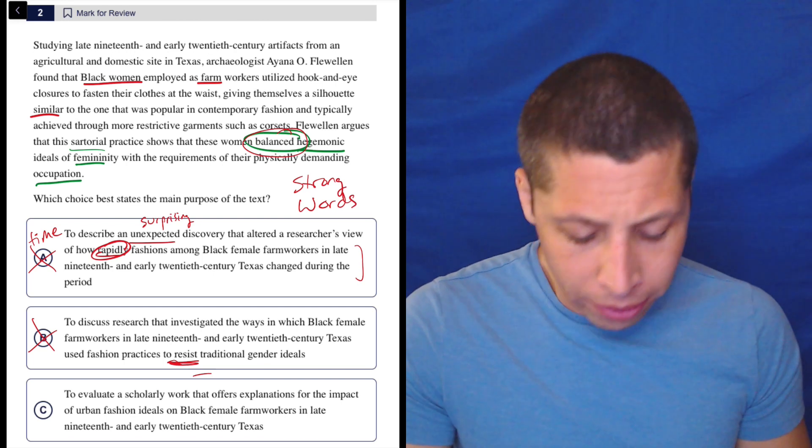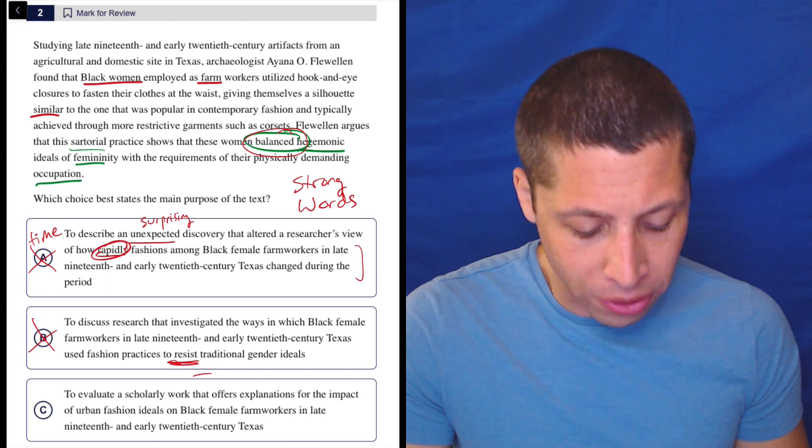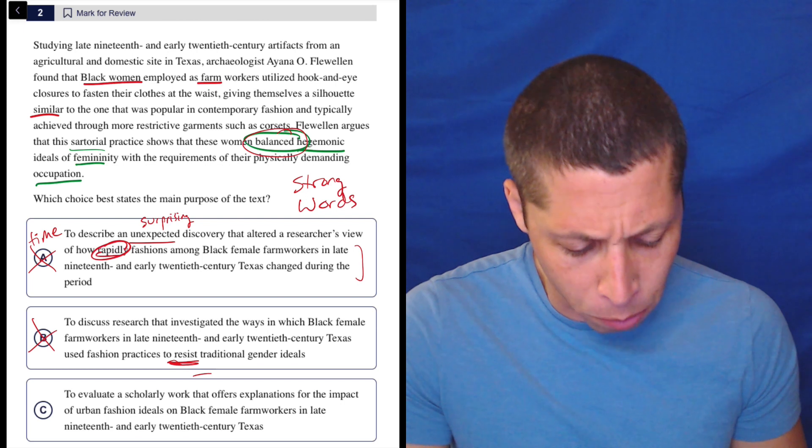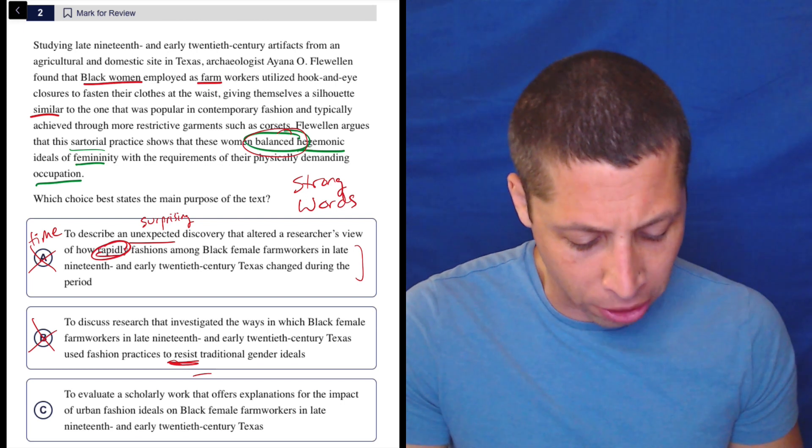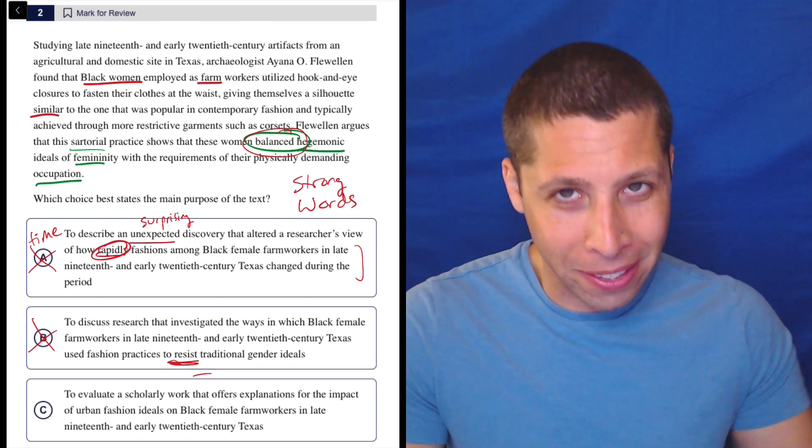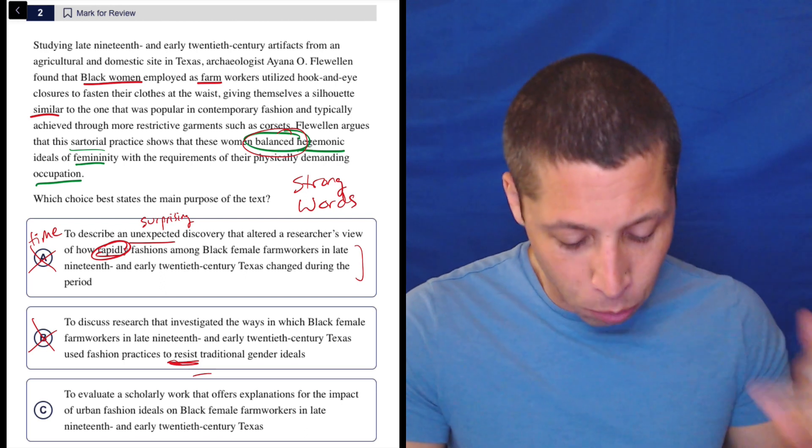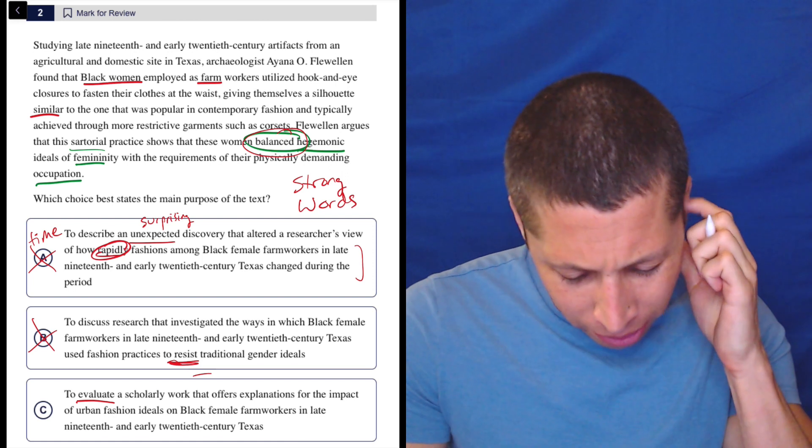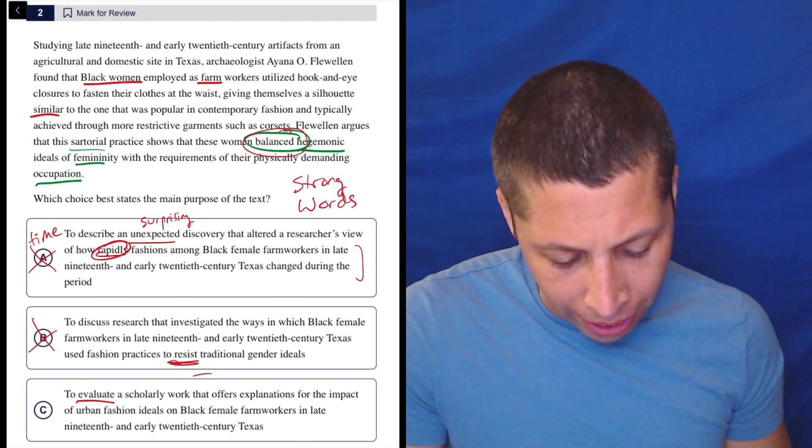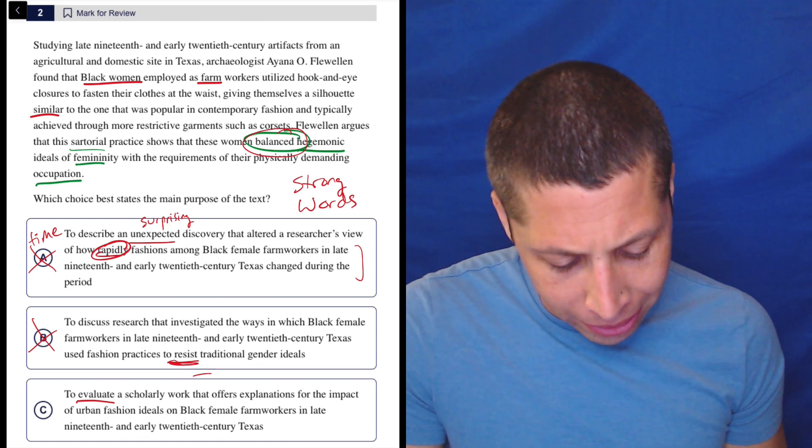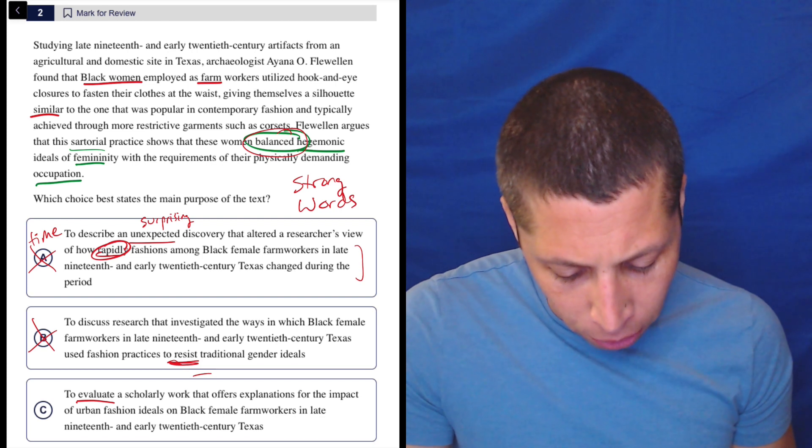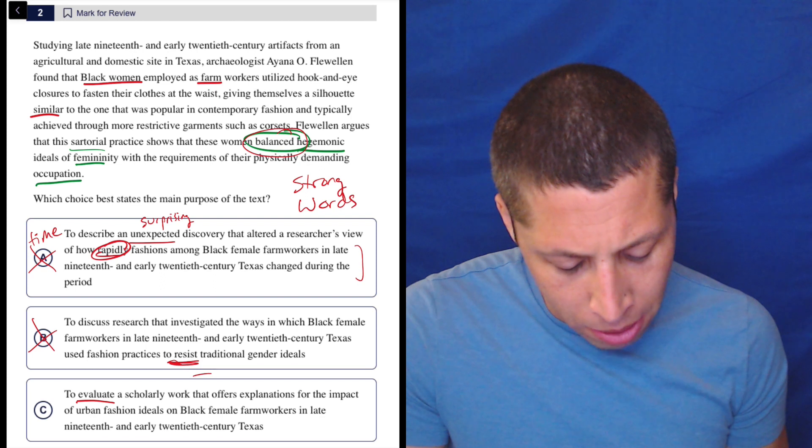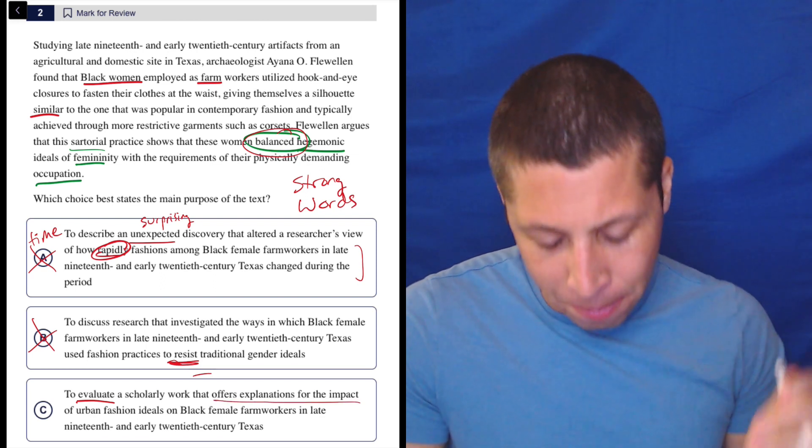Let's look at C, to evaluate a scholarly work that offers explanations for the impact of urban fashion ideals on black female farm workers in late 19th and early 20th century Texas. You can see this part about Texas and the time period keeps repeating, right? It's filler. It's what they say about that that matters. So are they evaluating a scholarly work? I don't know. That seems kind of strong in its own way. And the scholarly work has to offer explanations for the impact of urban fashion ideals on black female farm workers. I don't know, offers explanations for the impact. This just seems like filler too.